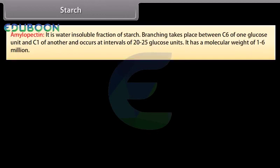Amylopectin is the water-insoluble fraction of starch. Branching takes place between C6 of one glucose unit and C1 of another, and occurs at intervals of 20 to 25 glucose units. It has a molecular weight of 1 to 6 million.